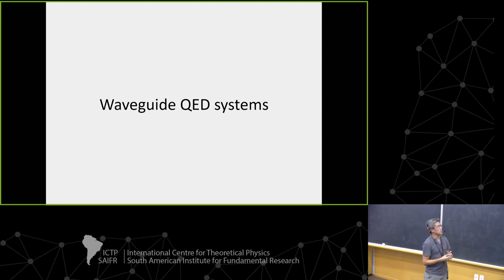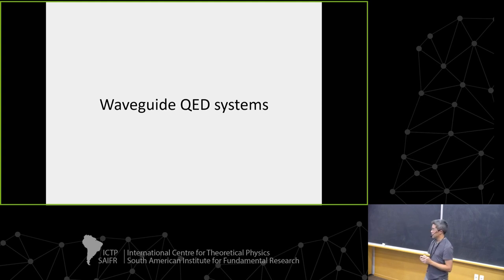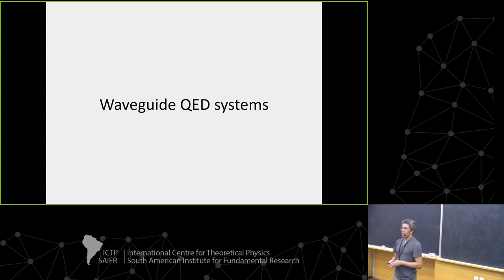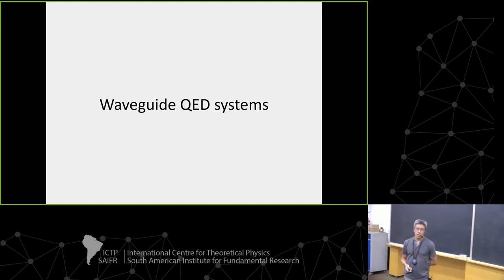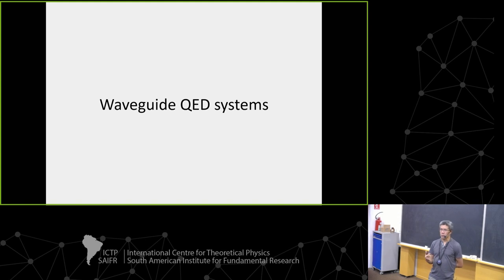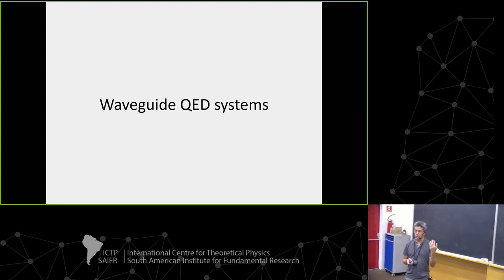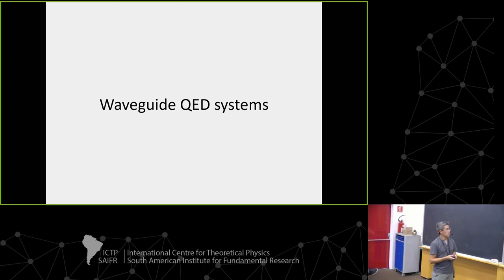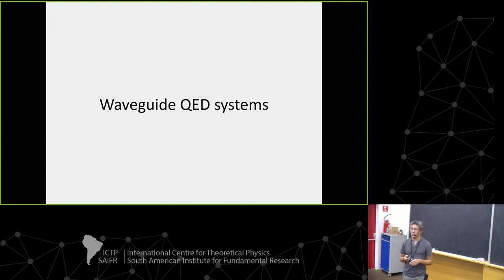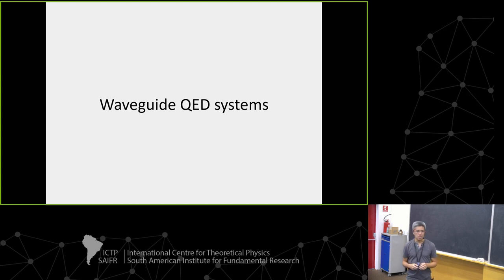Just to recall where we stopped yesterday, I introduced a minimal model of atom-light interactions in 1D, which is a chiral waveguide. Basically, light could only propagate in one direction and interact with atoms without backscattering.